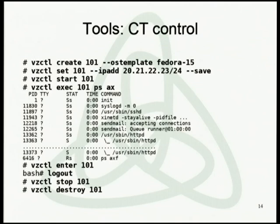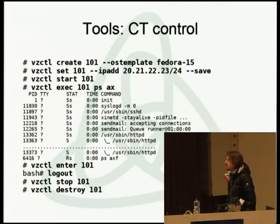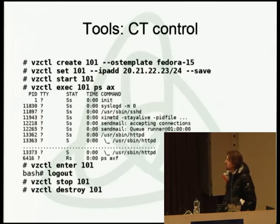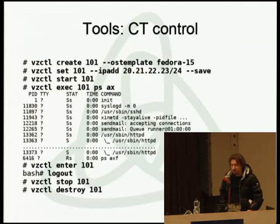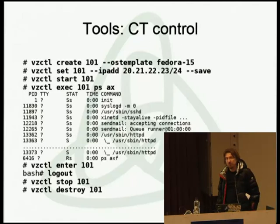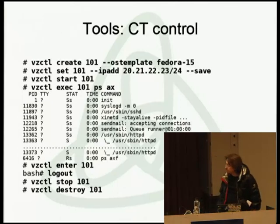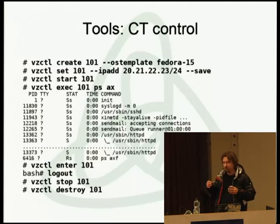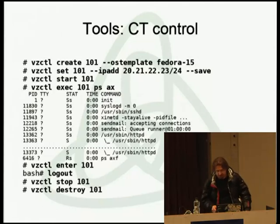There's one slide about tools. VZCTL is the high-level tool to operate containers. A typical container lifecycle: create the container specifying a distro template, set the IP address and other parameters like memory, start the container, go inside and see the usual process tree, then stop it and destroy it. All of this takes about two minutes — compare that to setting up a physical server. Whenever you need a new server, you can fire up a new container in two minutes.